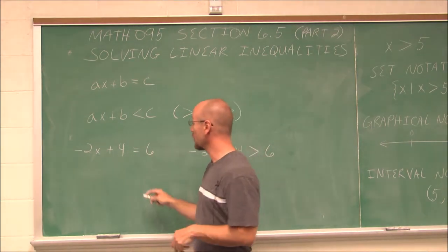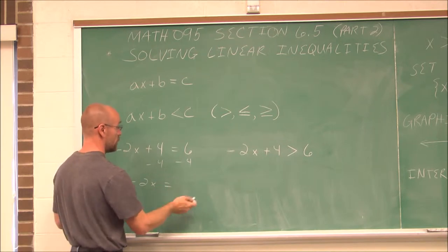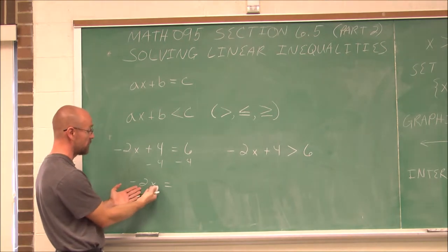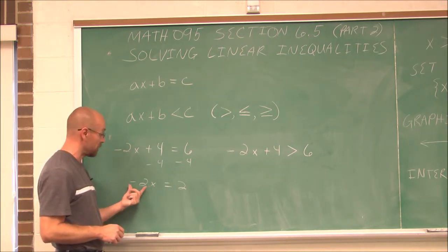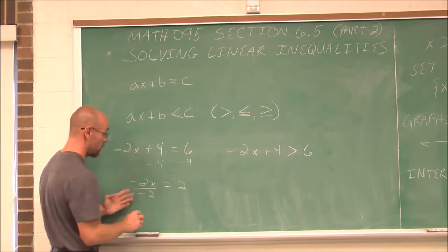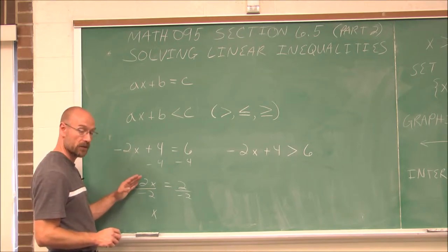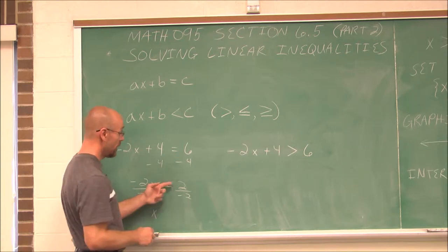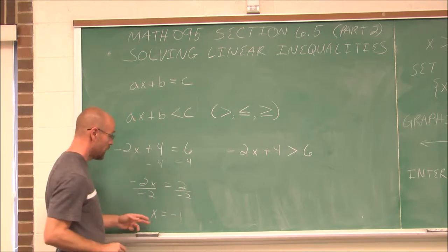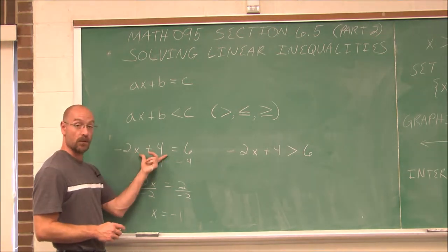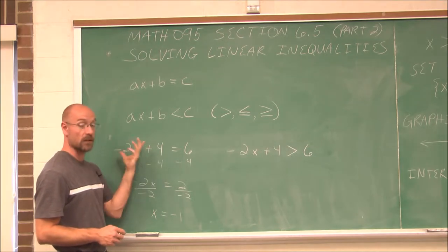To solve this, I'm going to undo my order of operations. I'm going to subtract 4 from both sides, because my overall goal is to get x by itself. So 4 minus 4 goes away, leaving us with negative 2x, because 4 minus 4 is 0, and 6 minus 4 is 2. To get x by itself, I have to undo this multiplication by dividing by the coefficient, which is negative 2. Negative 2 over negative 2 is positive 1. On the other side, positive 2 divided by negative 2 gives a negative value, and 2 over 2 is 1. So x equals negative 1 is the solution. I can check: negative 1 times negative 2 is positive 2, plus 4 is 6. 2 plus 4 is 6. That's a true statement.